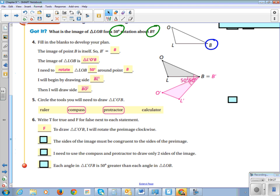The sides of the image must be congruent to the sides of the pre-image. Yes, we have to have the same side lengths, the same angle measures. I need to use the compass and protractor to draw only two sides of the image. That's true, because how does that third side come about? If you already have the two sides, all you've got to do is connect the end points, and there's your third side.